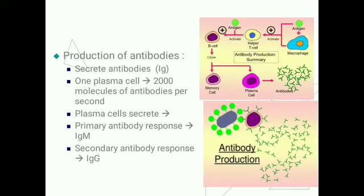Production of antibodies: these are immunoglobulins. One plasma cell can produce 2000 molecules of antibodies per second. Plasma cells secrete antibodies of single specificity, or a single antibody class. Primary antibody response produces IgM varieties of antibodies, and secondary response produces IgG variety.